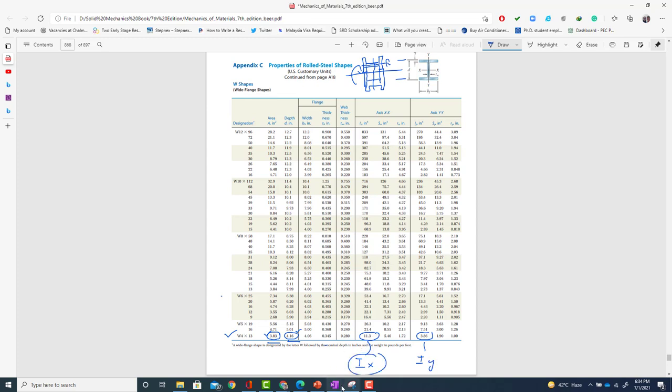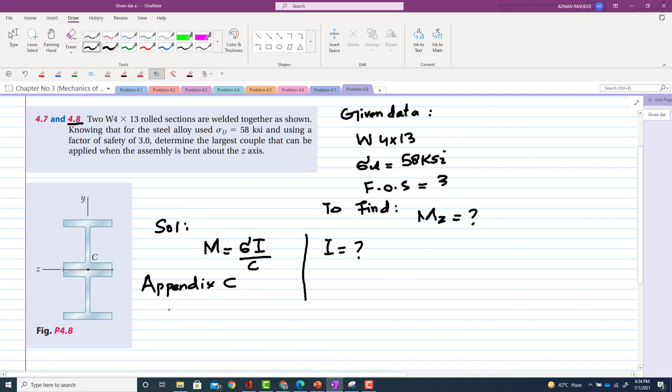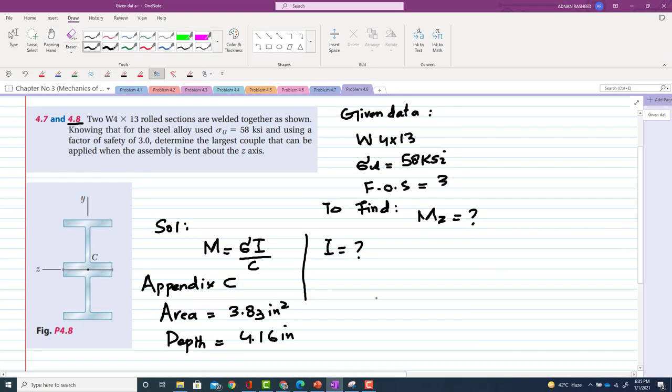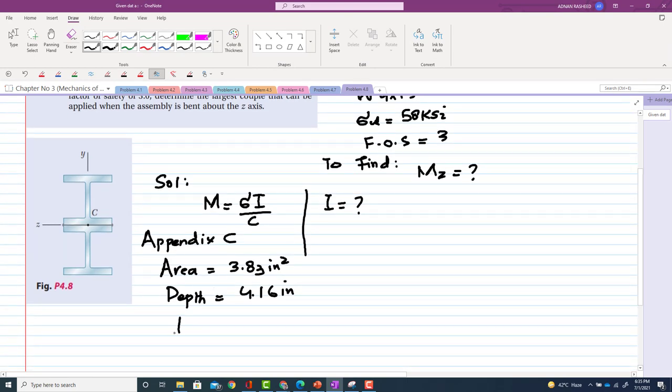Let me write this data. Area is equal to 3.83 inch squared, total depth or breadth is 4.16 inches, and Ix is equal to 11.3 inch to the fourth. Now I will explain why we have taken Ix.